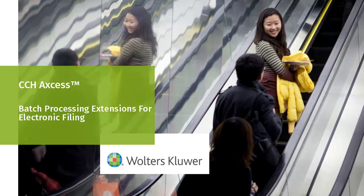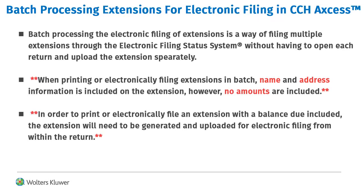Welcome to the video on Batch Processing Extensions for Electronic Filing in CCH Axcess. Batch Processing Extensions for Electronic Filing is a method of filing a group of extensions at one time without opening each return to export the extension. Note that when filing extensions in batch, only the name and address information is included and no amounts are. Extensions can be included as long as the return has been created and calculated for the desired year.